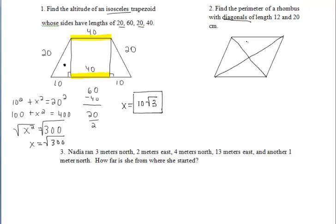For number 2, we want to find the perimeter of a rhombus with diagonals length 12 and 20. Well, remember in a rhombus, the diagonals bisect each other. So I'm listing that here. And they're also perpendicular to each other. The diagonals are perpendicular bisectors.